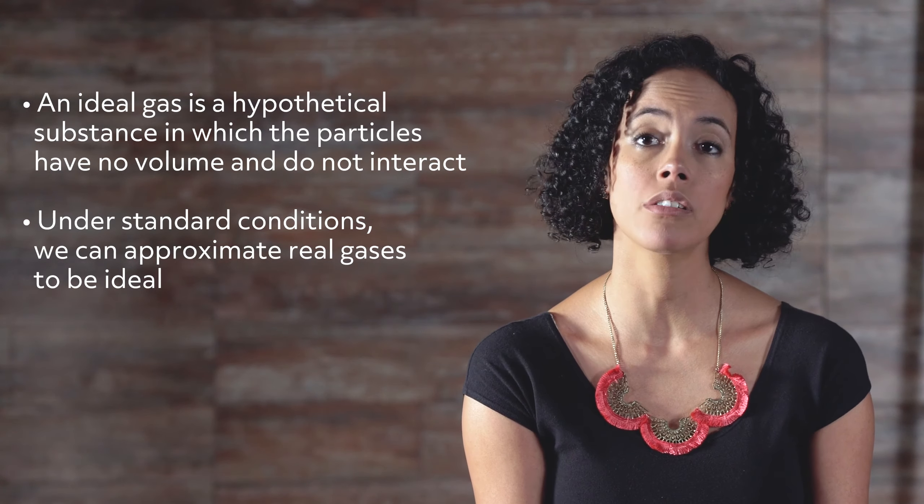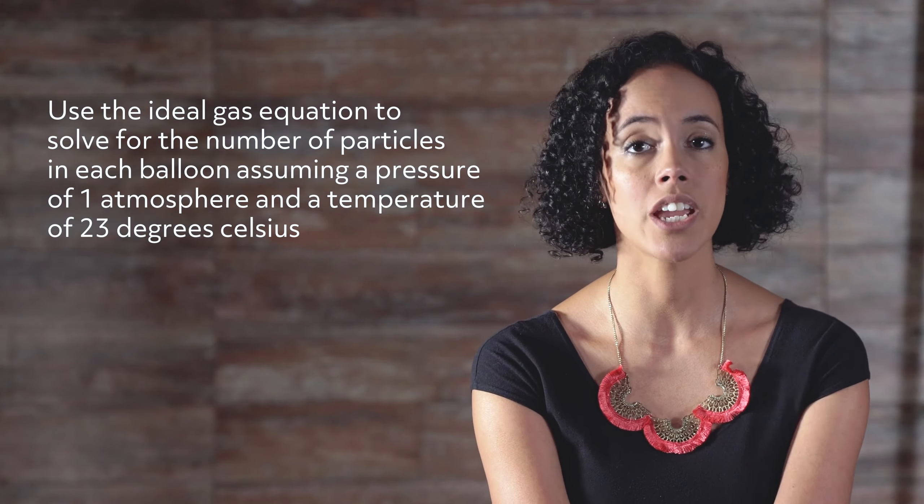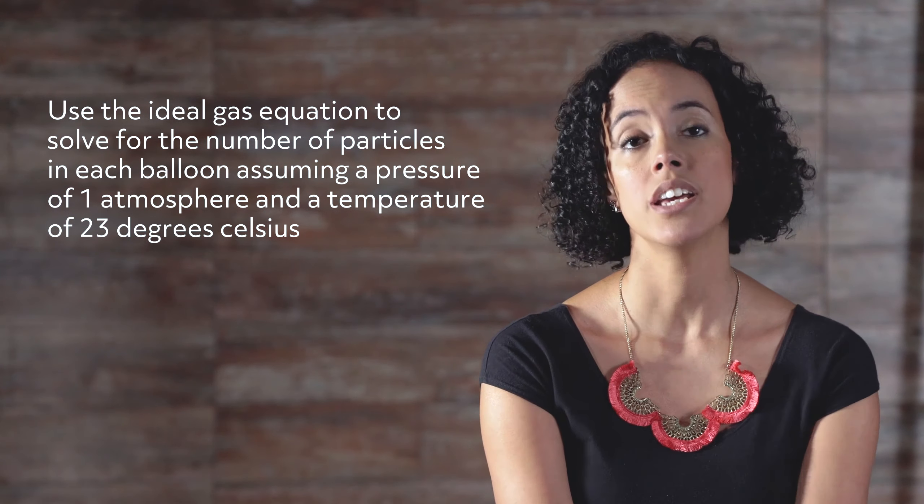This led to the development of the well-known ideal gas law: pressure times volume equals the number of moles times the universal gas constant times temperature. The conclusion was also made that we could use it for real gases, not just the fictional ideal gas. An ideal gas is a hypothetical substance in which the particles have no volume and do not interact. Under standard conditions, we can approximate real gases to be ideal — real gas particles are so much smaller than the overall volume that it's okay to assume they take up no space. And because particles are moving so fast and spend so little time next to each other, their interactions are quite insignificant. Thus, we can apply the ideal gas law to any gaseous substance.